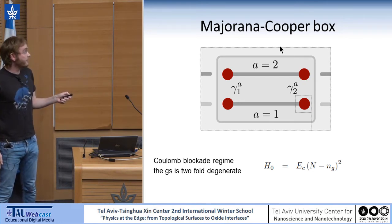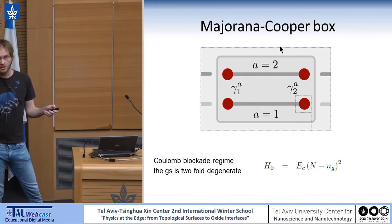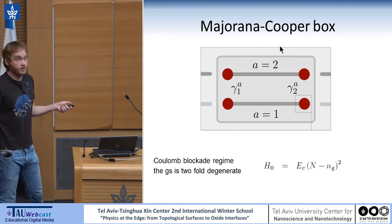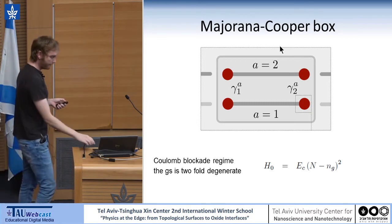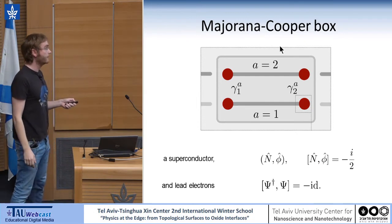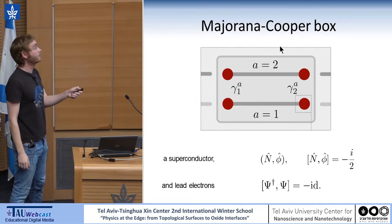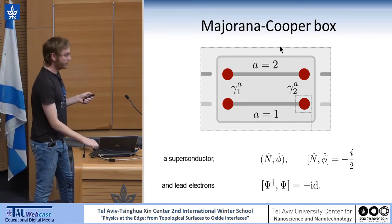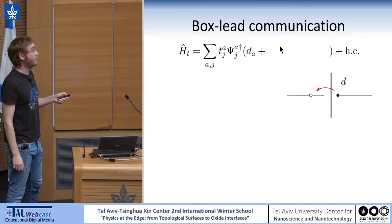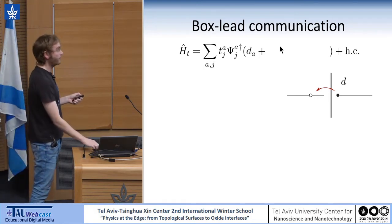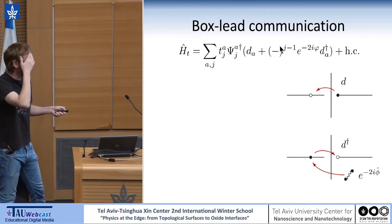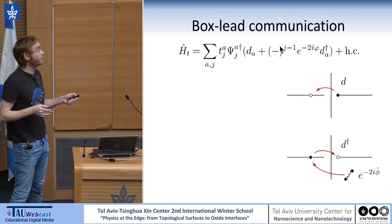The charge can be either on this wire or this wire, so the ground state of the system is doubly degenerate. If we look at the entire system consisting of many of these boxes, the ground state is highly degenerate — the degeneracy is two to the N. We have a superconductor with number operator N and phase phi, corresponding to the lead operator coupled to this island. Charge can be transferred to the island via a basic hopping process or a more complicated process involving breaking or creating a Cooper pair — where e to the minus i phi creates or breaks a Cooper pair, and the charge goes both into and out of the island.